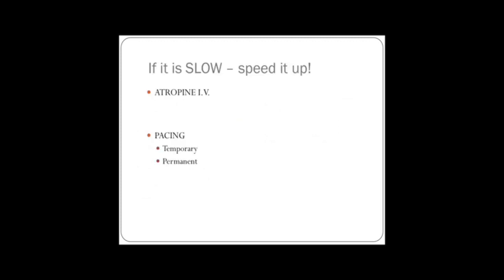Just like with tachycardias, if it's fast, slow it down. With bradycardias, if it's slow, speed it up. Remember we used adenosine as our drug to slow it down. In the case of bradycardias, we use atropine to speed it up. Now instead of cardioversion for bradycardias, like in tachycardias, we use pacing.